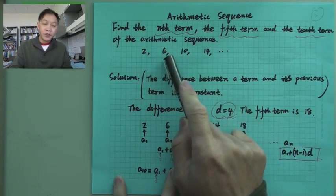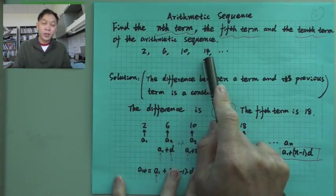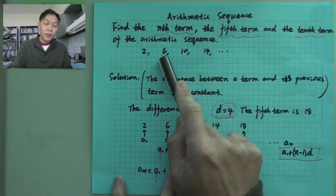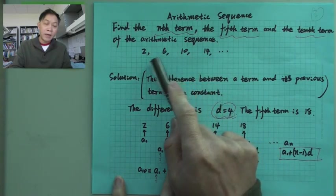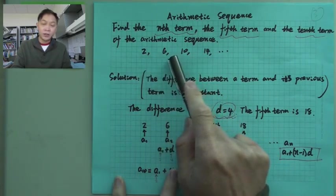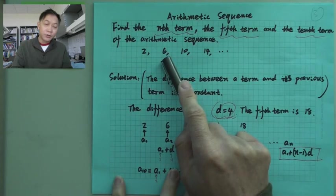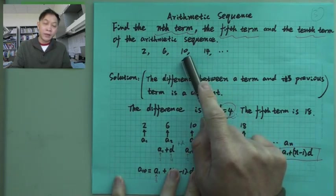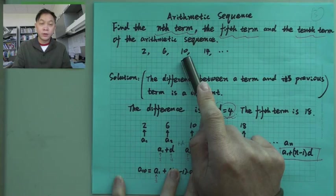2, 6, 10, 14. Each term... 6 minus 2 is a constant. You see, 6 minus 2 is 4, 10 minus 6 is 4, 14 minus 10 is 4.